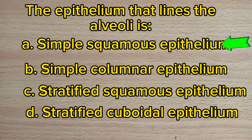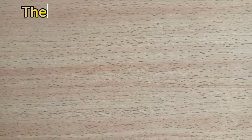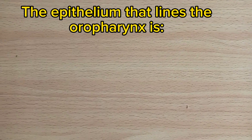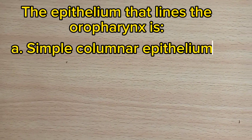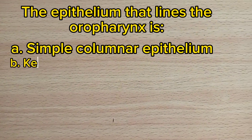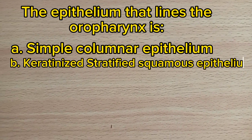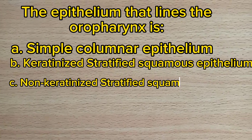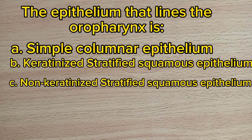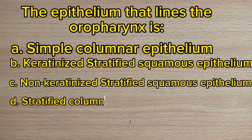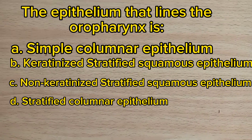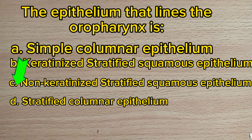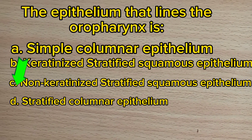Number 8. The epithelium that lines the oropharynx is: A. Simple columnar epithelium. B. Keratinized stratified squamous epithelium. C. Non-keratinized stratified squamous epithelium. D. Stratified columnar epithelium. Answer: C. Non-keratinized stratified squamous epithelium.